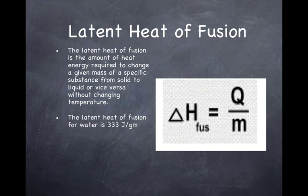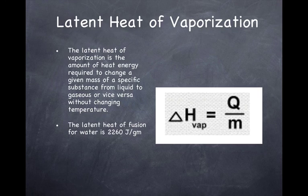It's always 333 joules per gram for ice — it doesn't change; it's a constant value. It would be different for different substances, however. The latent heat of vaporization is the amount of heat energy required to change a given mass of a specific substance from liquid to gaseous state, or vice versa, without changing temperature.